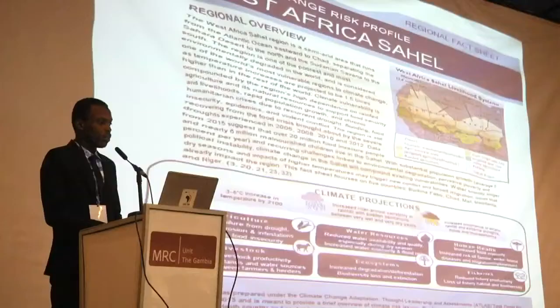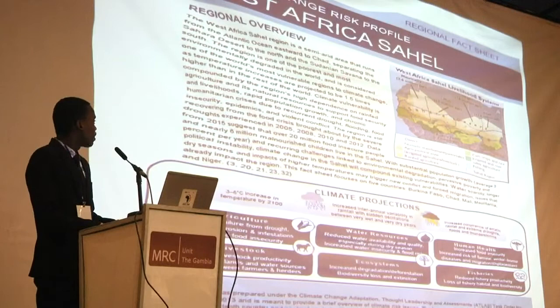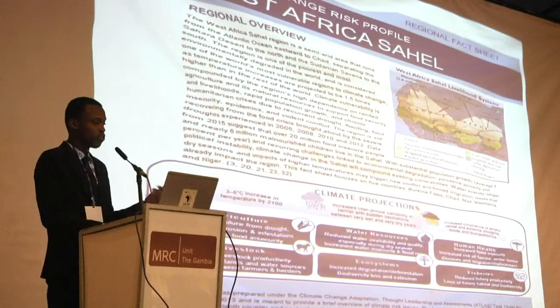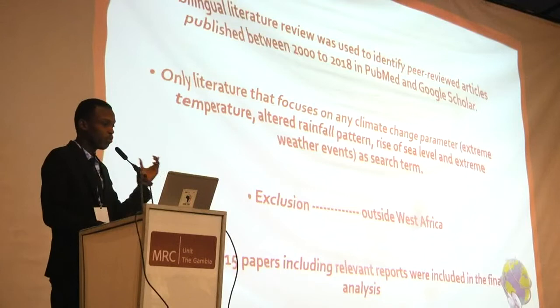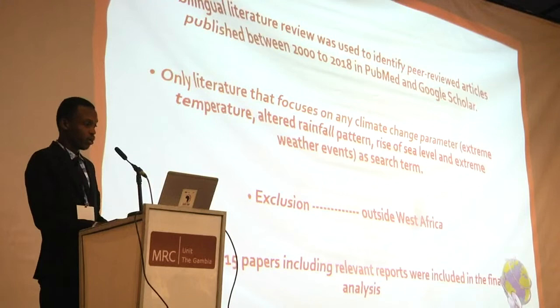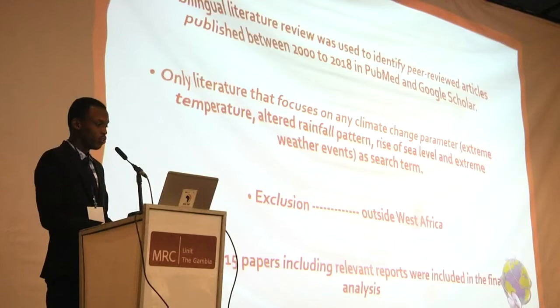This shows the projected risk profile of West Africa — how climate change is going to affect agriculture, health, women's health, ecosystems, and others. Only journals indexed in PubMed and Google Scholar were included in the study, using search terms to find published studies based on four headings. At the end of the search, 15 papers including relevant reports were included in this review.